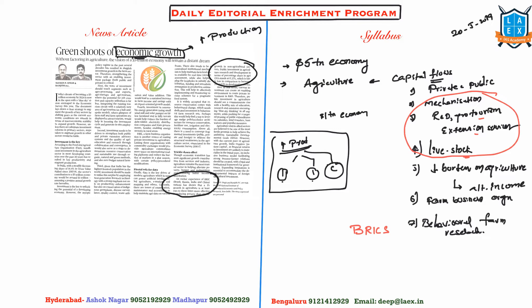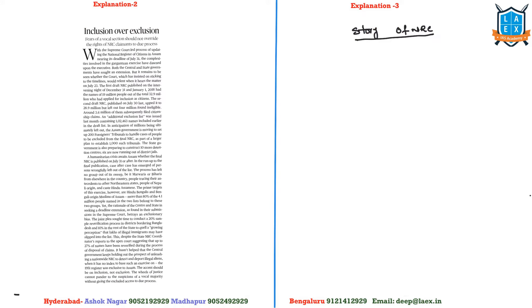The take-home point from BRICS economies: if 0.3 paise is spent on agriculture R&D, the returns will be 1 rupee — three times the returns. As of now in India, the research amount spent is around 0.37 percent of GDP, while most developed countries spend more than 10 times that, close to 3 percent. India shall learn from this and increase investments in agriculture. The return on investment is very high in agriculture, both for productivity and for inclusive growth.